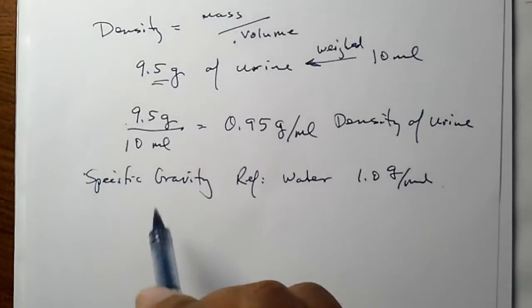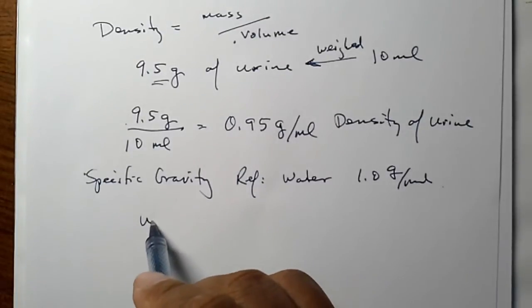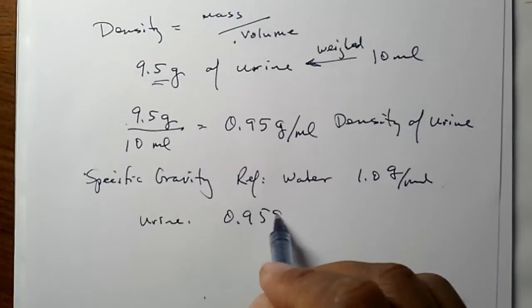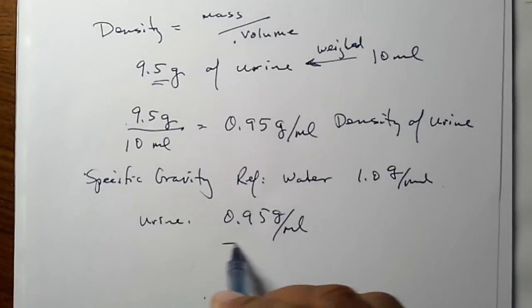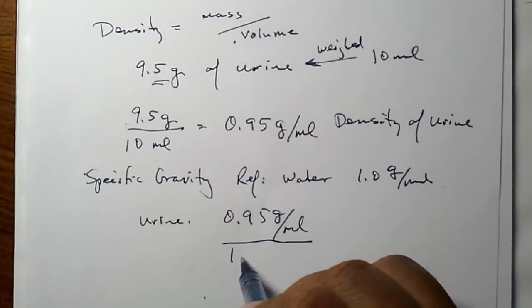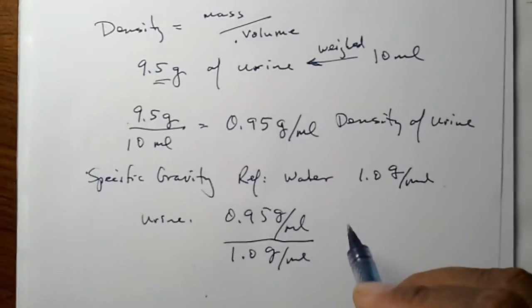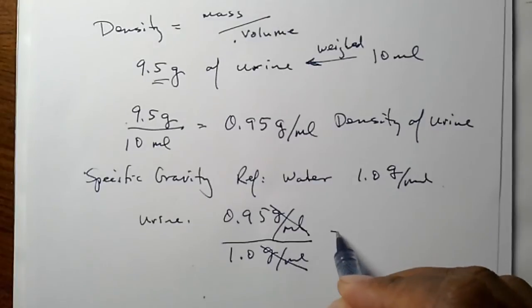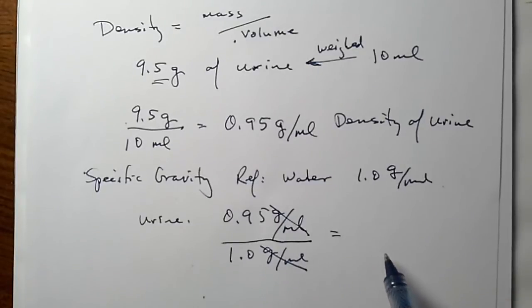So to find the specific gravity of our urine, we take the density of urine, 0.95 grams per milliliter, and divide by the density of water. Our units cancel out because our specific gravity is unitless, and we get a specific gravity of 0.95.